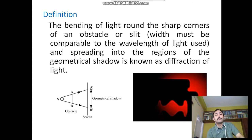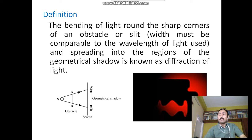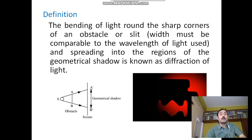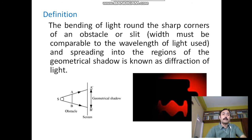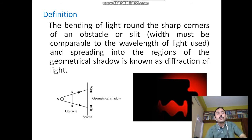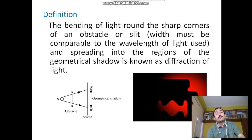Now, the definition of diffraction: the bending of light round the sharp corners of an obstacle or slit. The slit width must be comparable to the wavelength of light used, and spreading into the regions of the geometrical shadow is known as diffraction of light. That means light must fall on some sharp corner or sharp obstacle, then the light will bend into its geometrical shadow region.